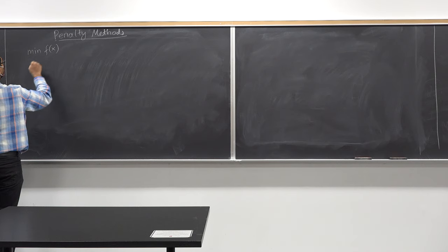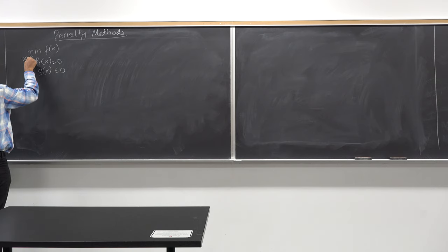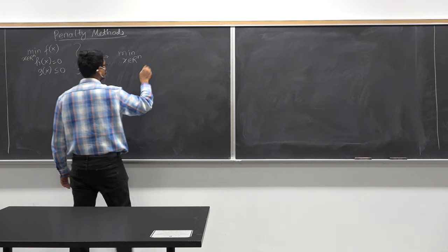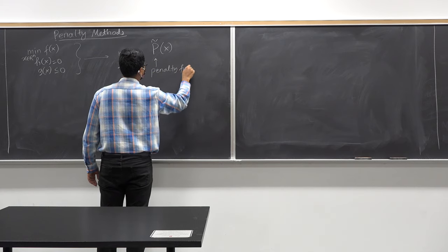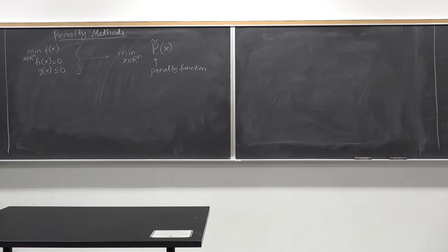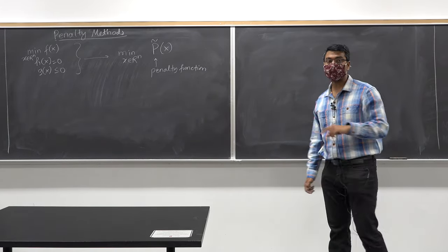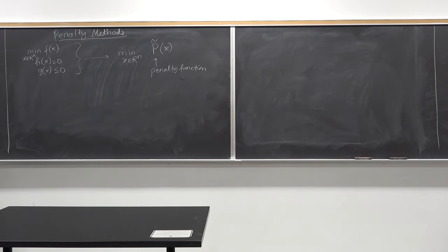So minimize f of x. You want to transform this problem into an unconstrained problem of some P-tilde of x — this is the penalty function. We tried to do that in the augmented Lagrangian method and also in the case of barrier method. We are trying to do something very similar today: convert the original constrained optimization problem into an unconstrained optimization problem with a penalty for violating the constraint.